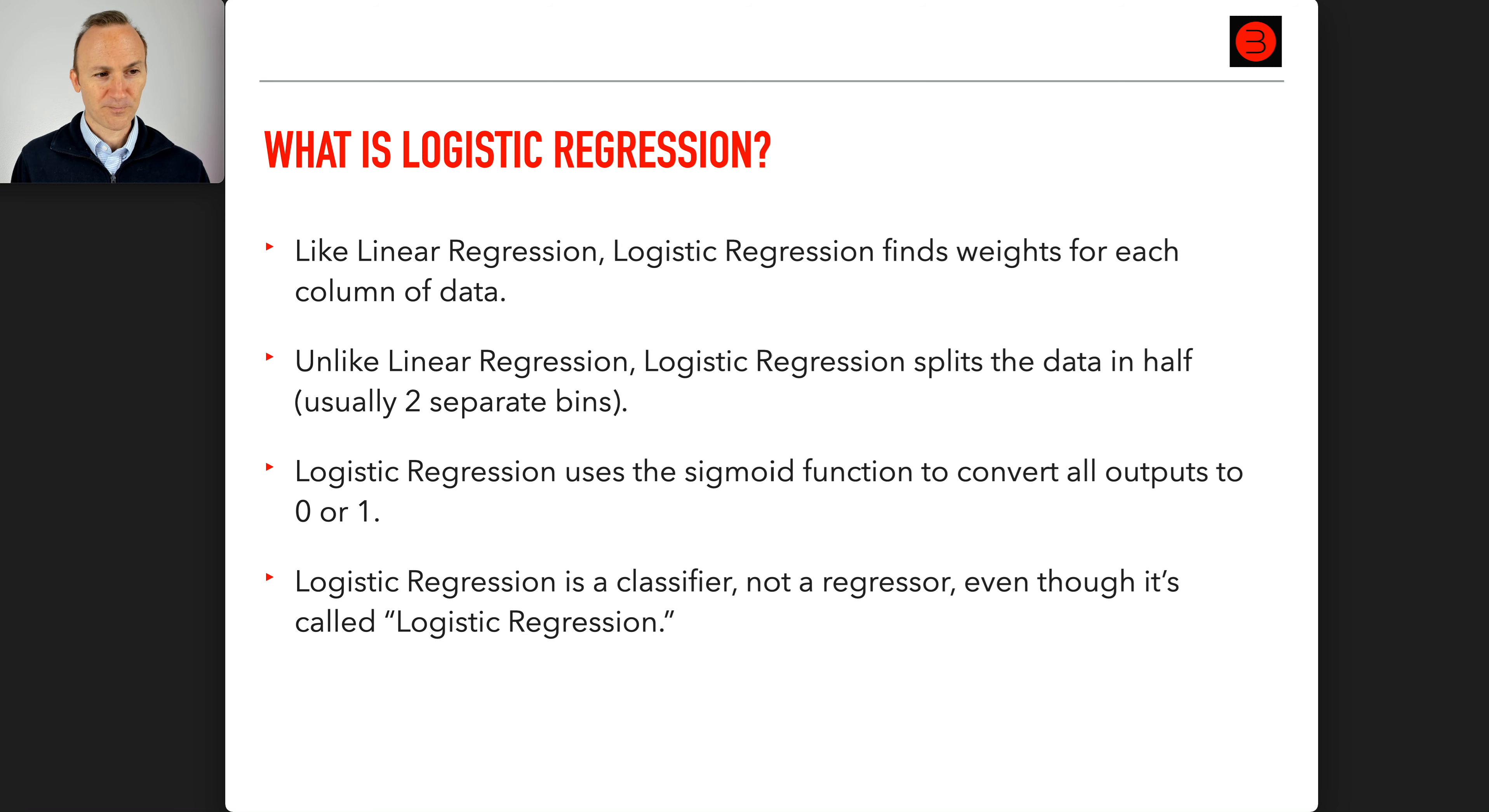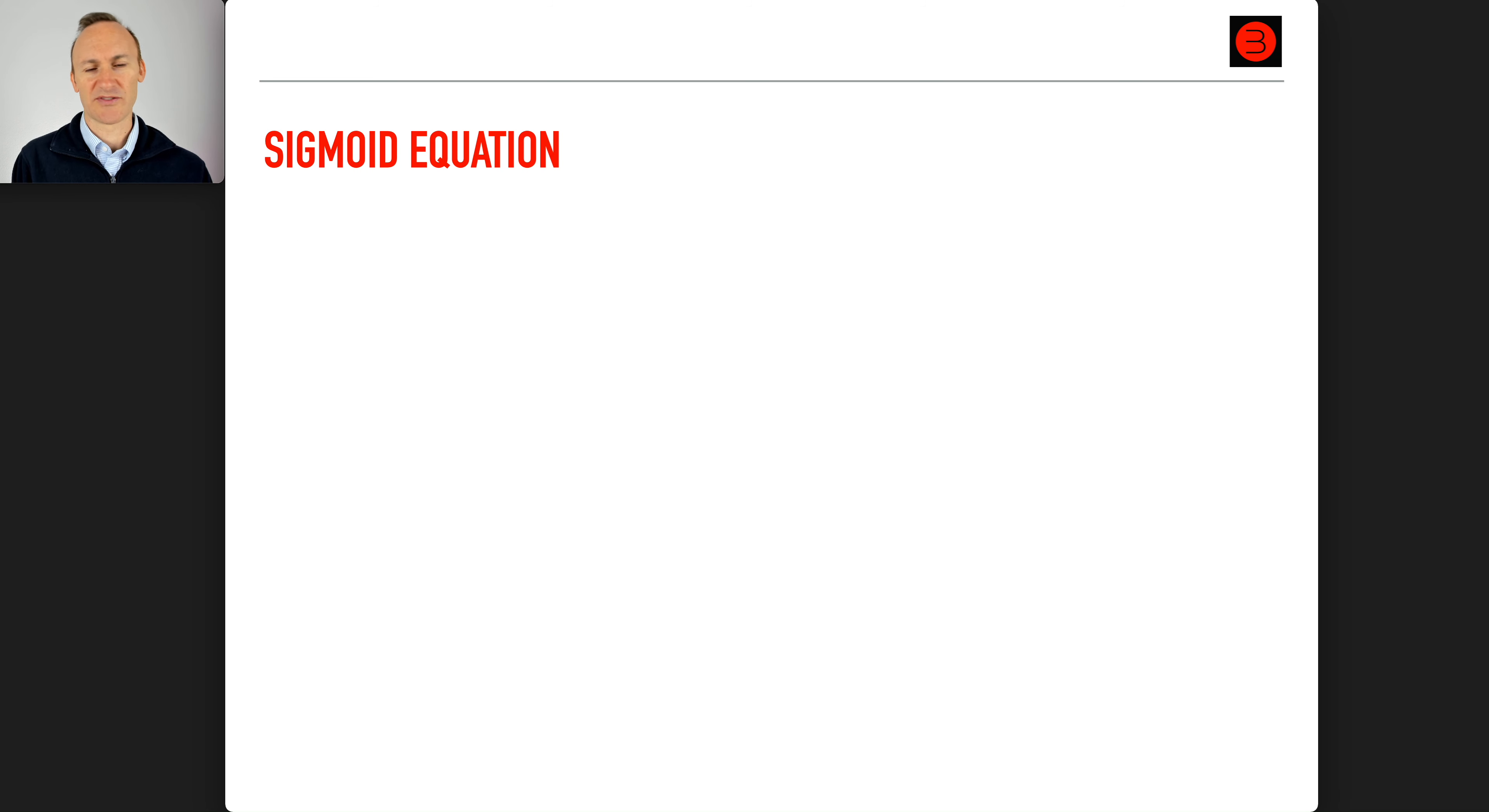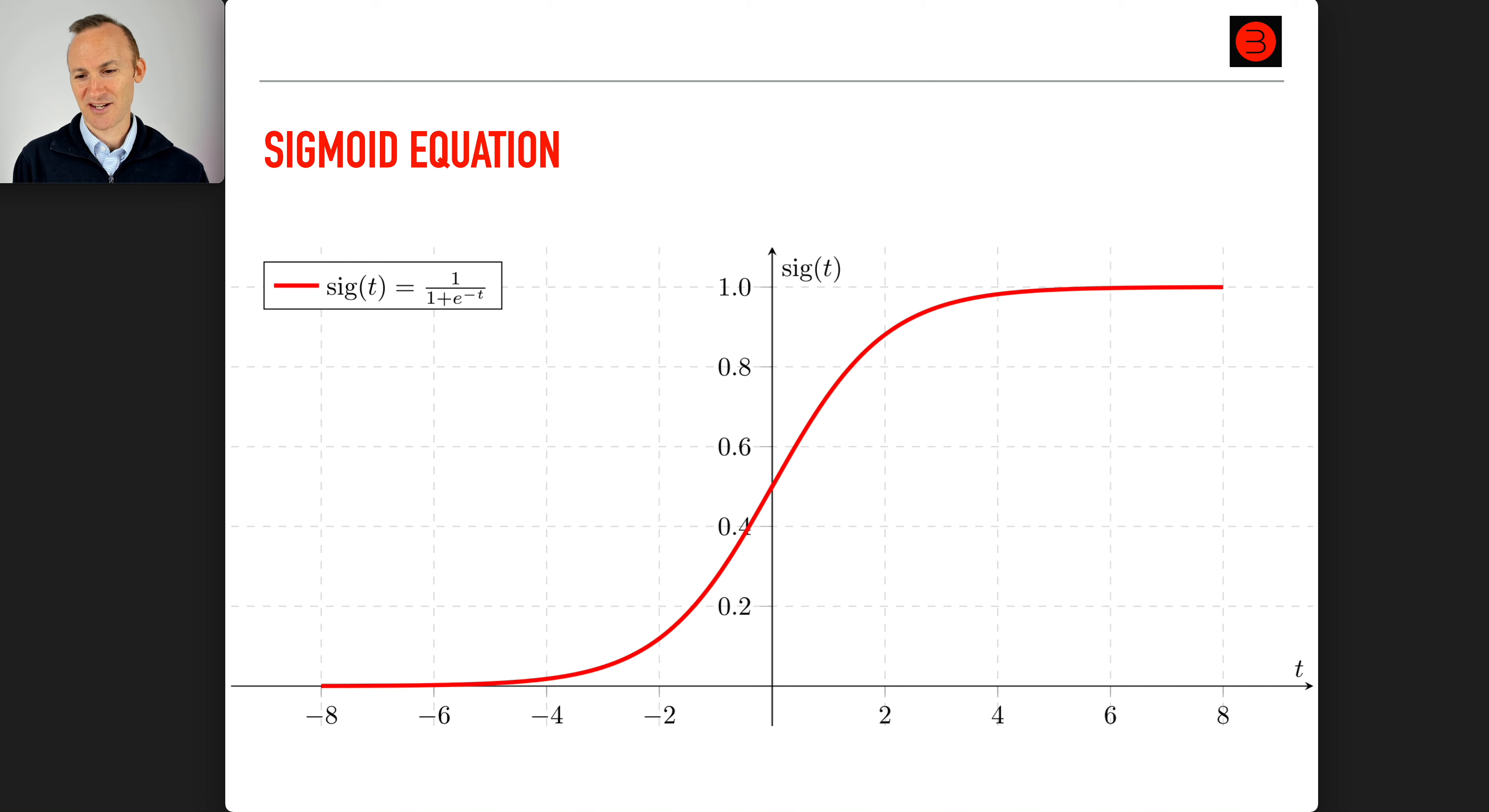Let's look at the sigmoid equation, which is what logistic regression uses. This is going to be a mathematical overview. It's not essential, but for those of you who are interested in the theoretical side, let's take a look. There is the sigmoid function. This is a beautiful function. Take a moment to actually look at it. The equation is provided for you: it's one over one plus e to the negative t.